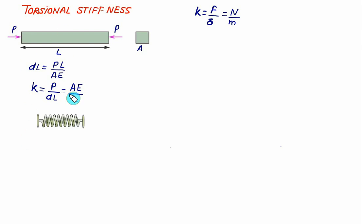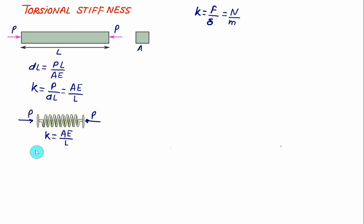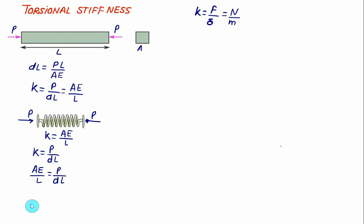We can replace this bar with a spring and show two compressive forces P acting on it. The spring has stiffness K equal to A·E divided by L. We verify: K = P/DL = AE/L. So any problem can be converted in terms of a spring, and this method is very commonly used in the finite element method.